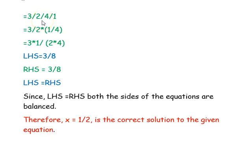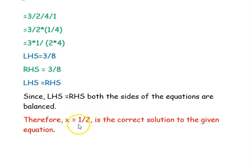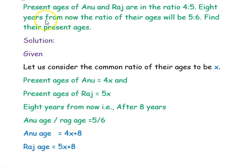To divide rational numbers, convert division to multiplication and interchange numerator and denominator: (3/2) × (1/4). Multiplying numerators and denominators separately: 3 × 1 = 3 and 2 × 4 = 8, giving 3/8. The left-hand side is 3/8, which equals the right-hand side. So the equation is balanced, confirming x = 1/2 is correct.